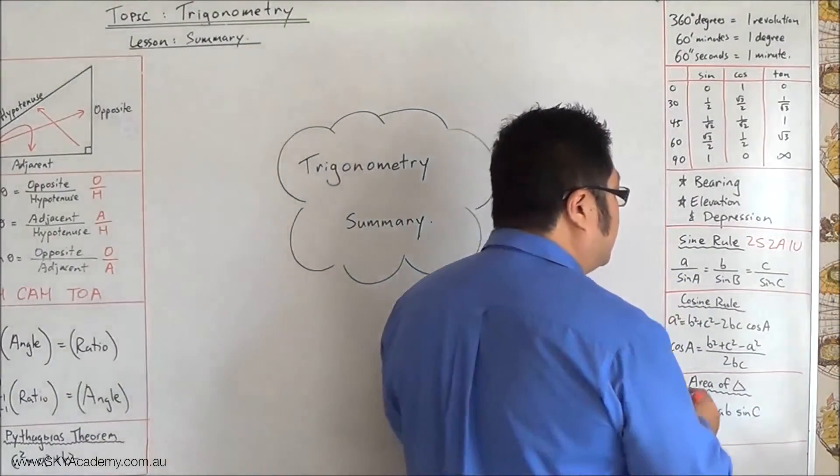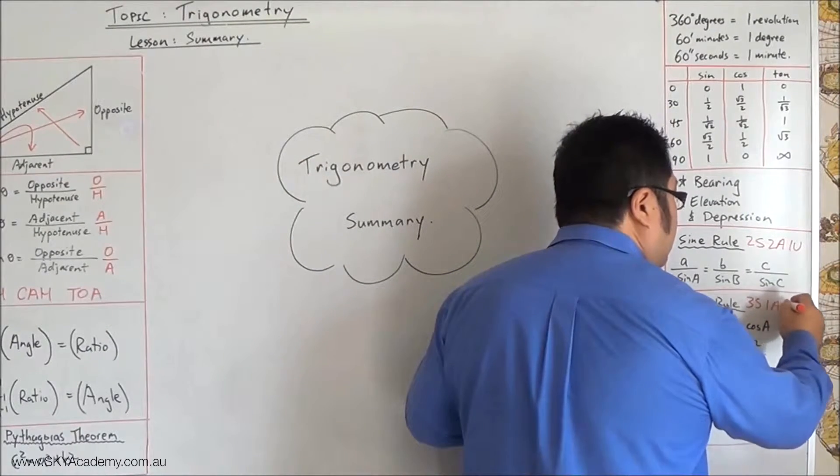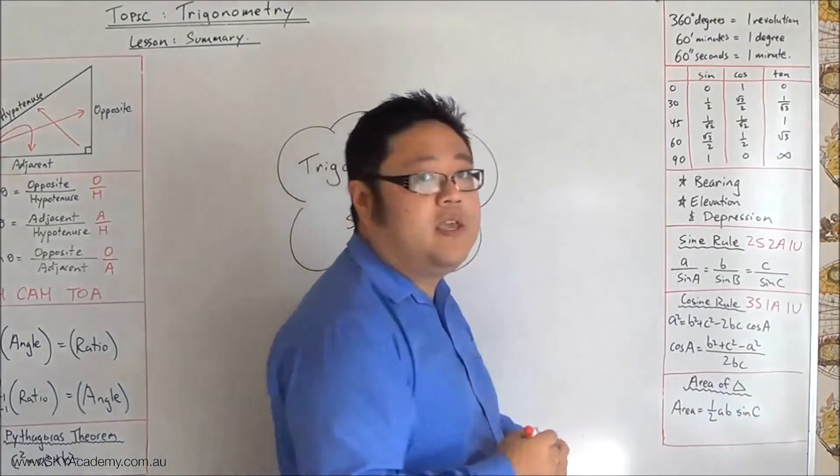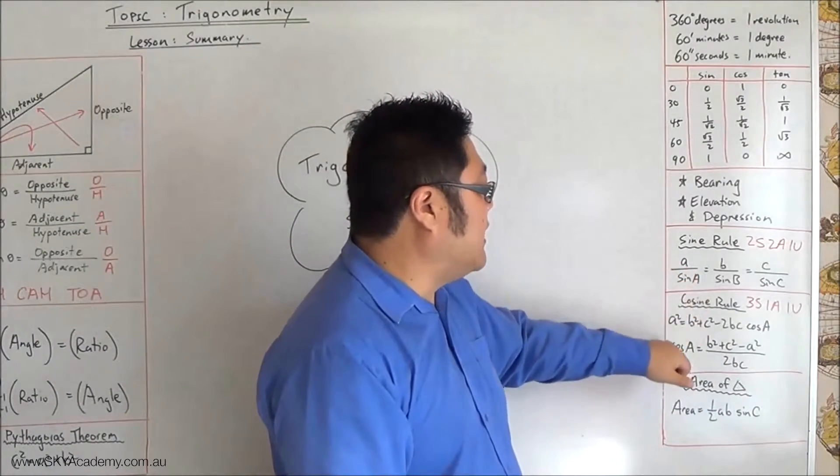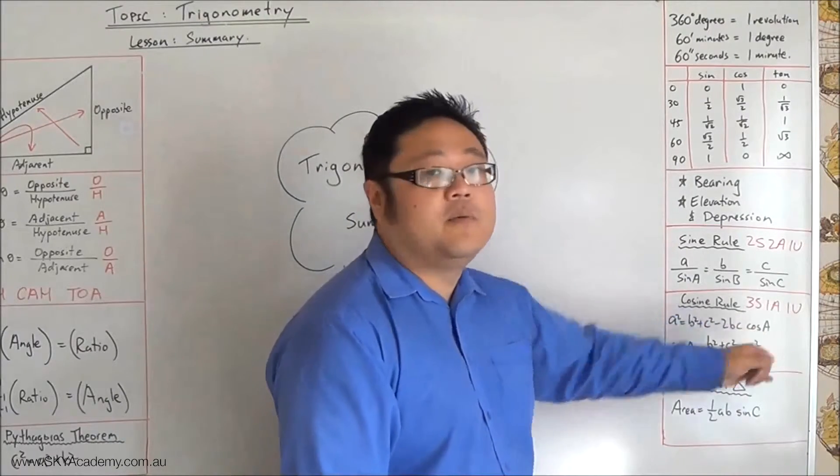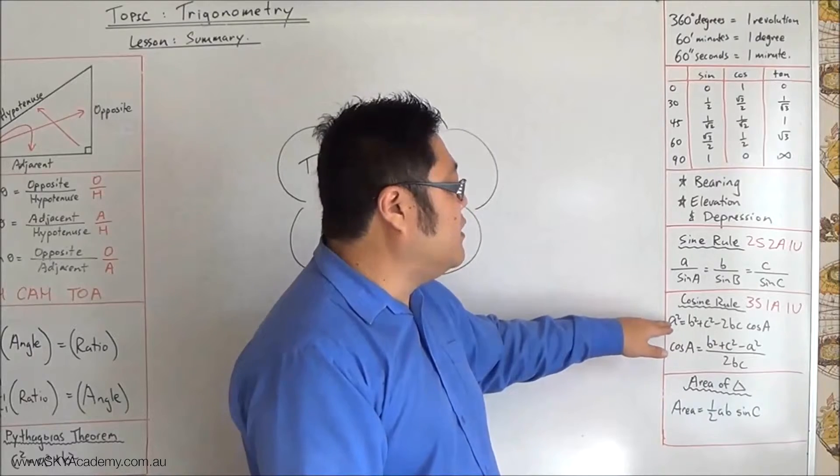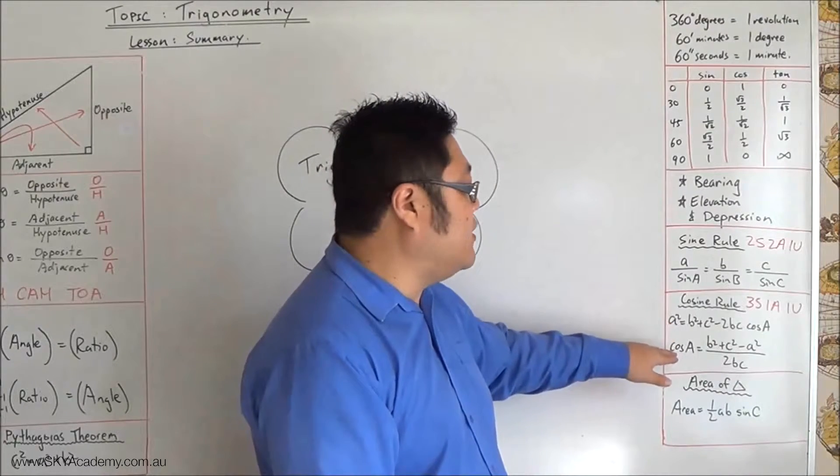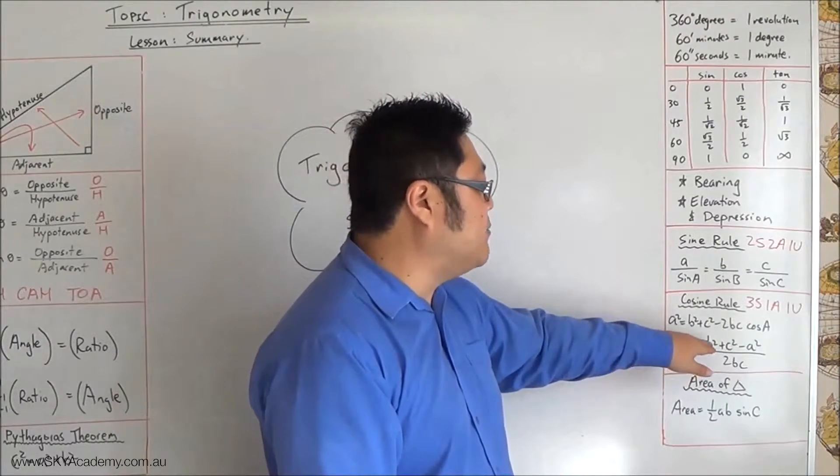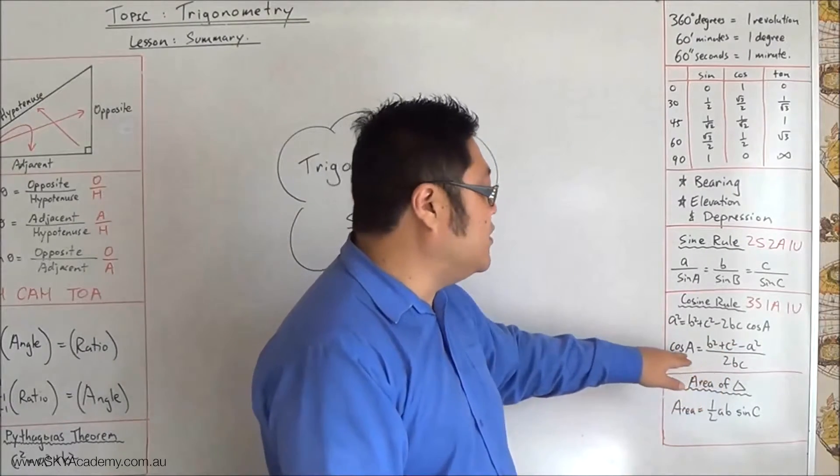And then we also looked at the cosine rule where we have three sides, one angle, one of which is unknown, which is a squared is equal to b squared plus c squared minus 2bc cos a. You use that one where you've got an unknown side, and you use the other one, cos a is equal to b squared plus c squared minus a squared all over 2bc, you use this one where you've got an unknown angle.